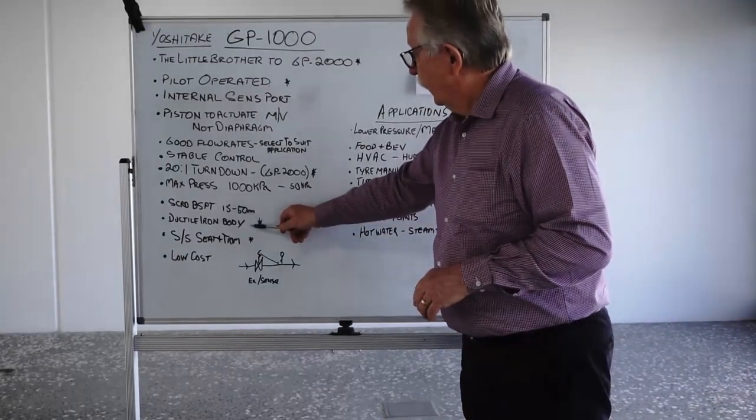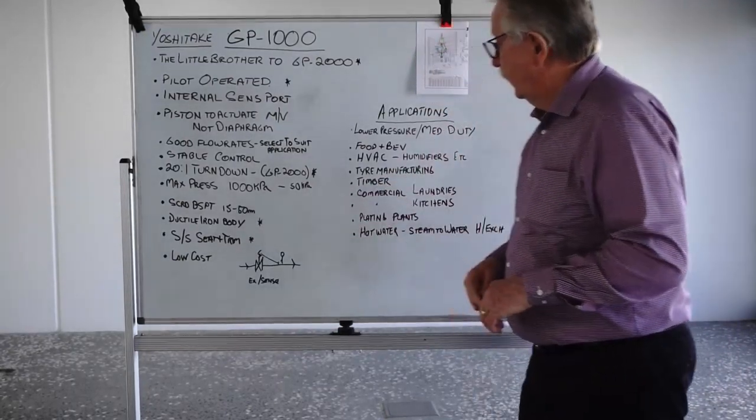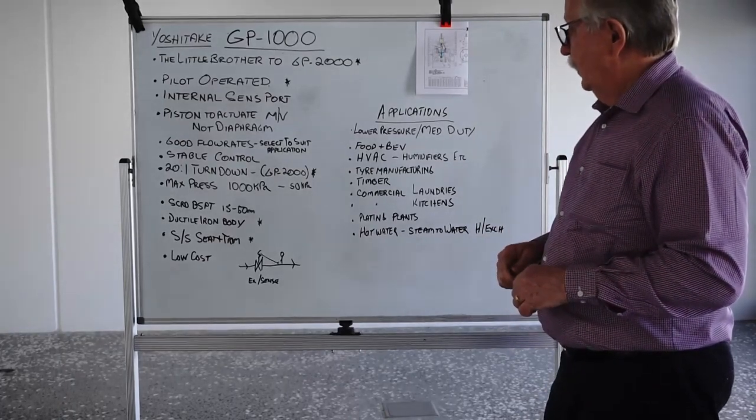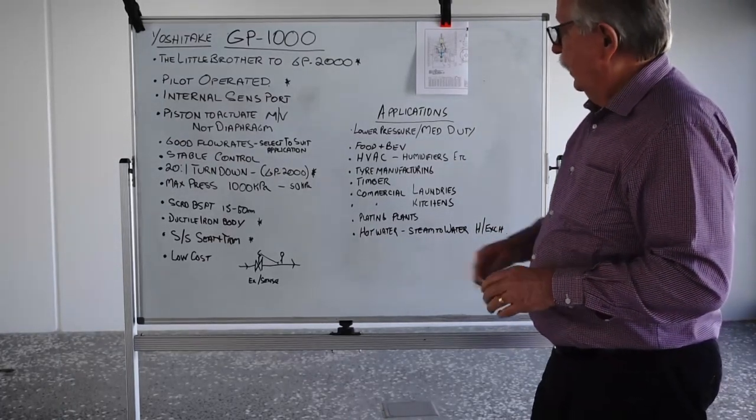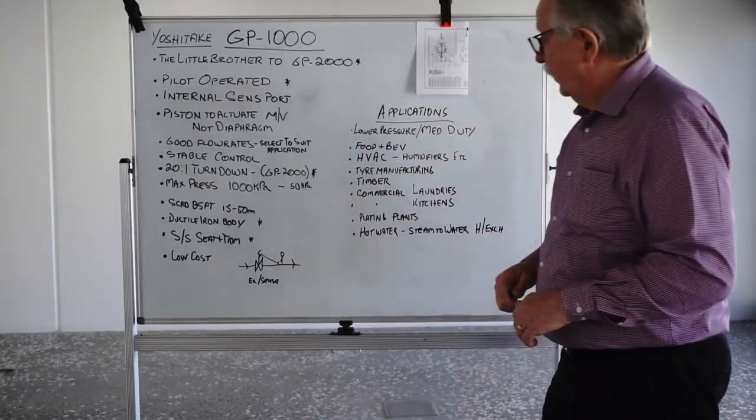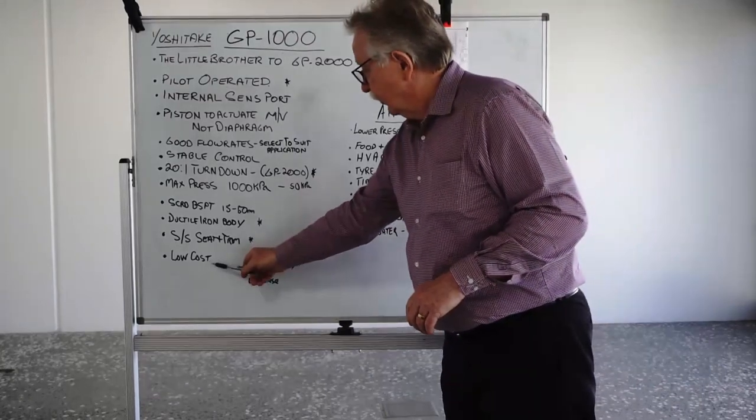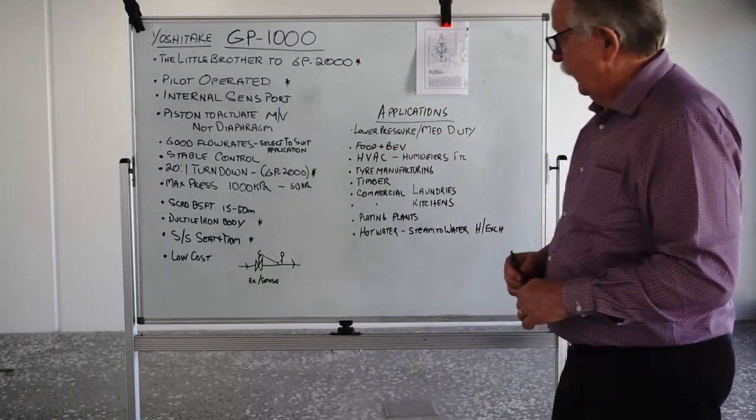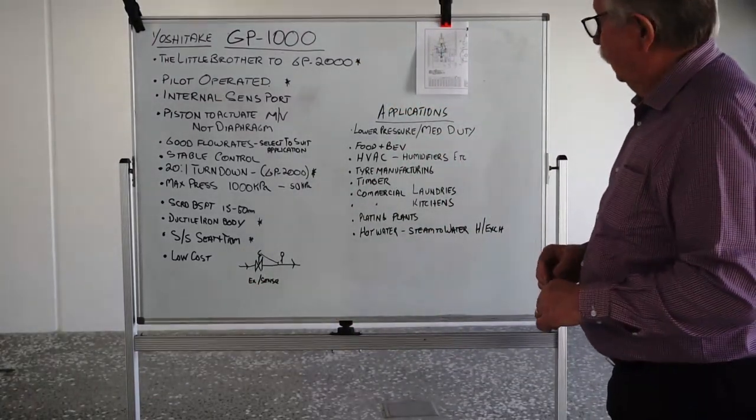They have ductile iron body which is similar to the GP2000. Stainless steel seat and trim, which is the same as the GP2000. But they are slightly lower cost, so there is an advantage in their cost there with the units.